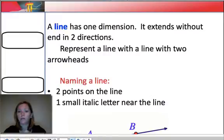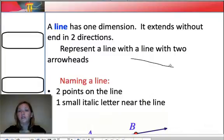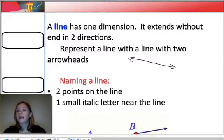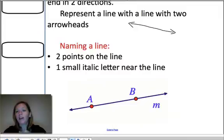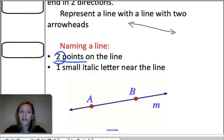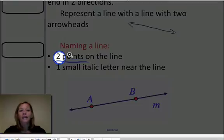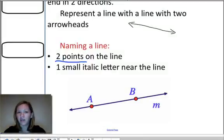We represent a line with two arrowheads. That means when we draw a line, what we're going to do is we're always going to try to draw a straight line there. We always put arrowheads at the end so we know that we're actually talking about a line. When we name a line, we have some choices. The first choice is that we can name it with two points on the line. So that number here is two. It's not three, it's not four, and it's not one. It's two. It's always two.